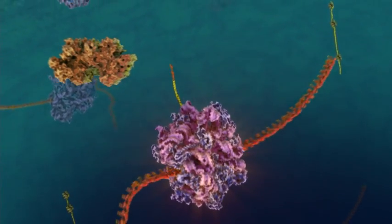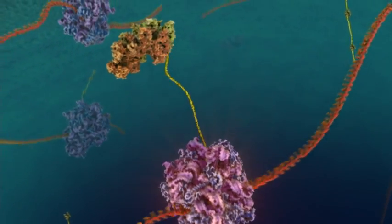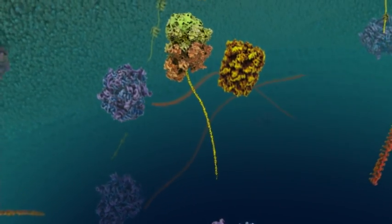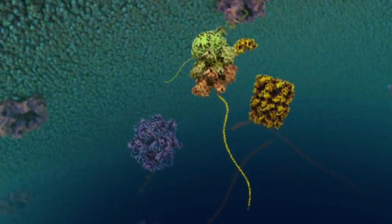Successive translation events by ribosome complexes cause translated recombinant protein to accumulate within the Corynebacterium glutamicum cytoplasm.